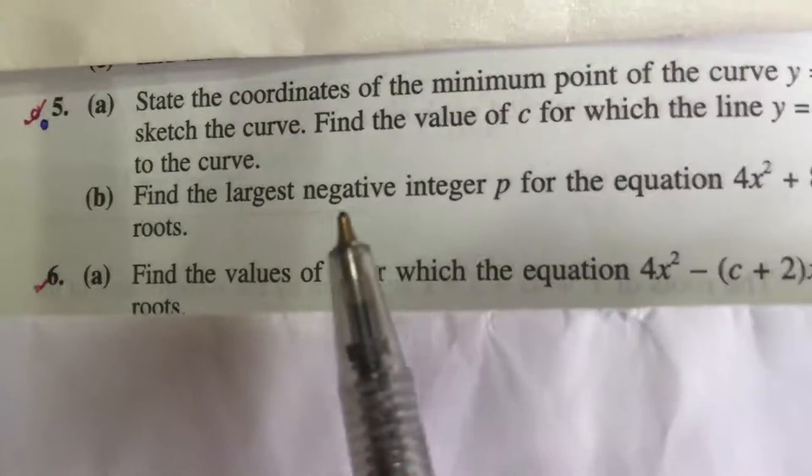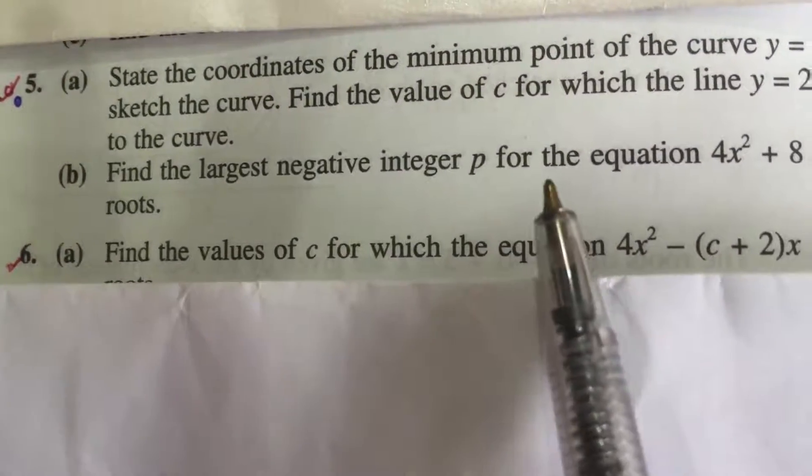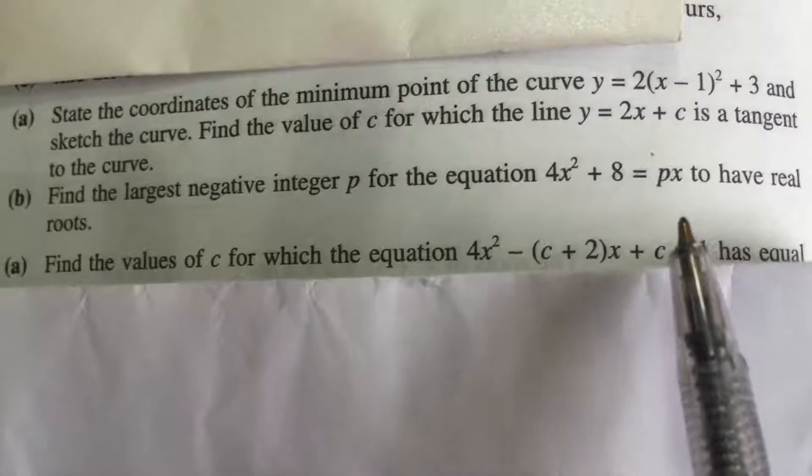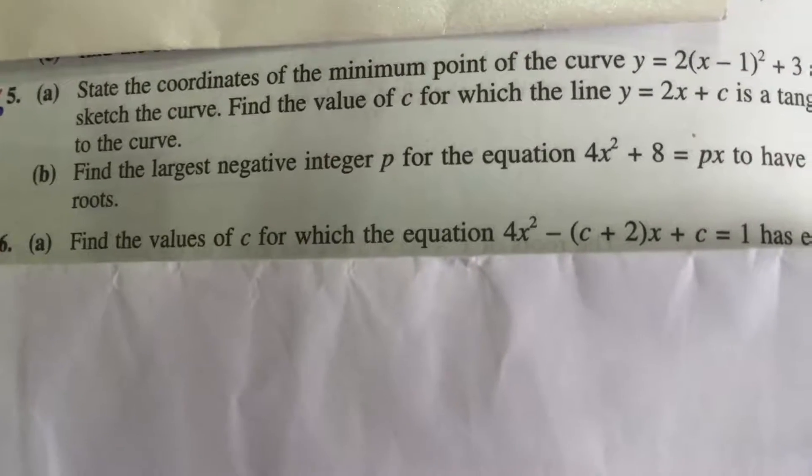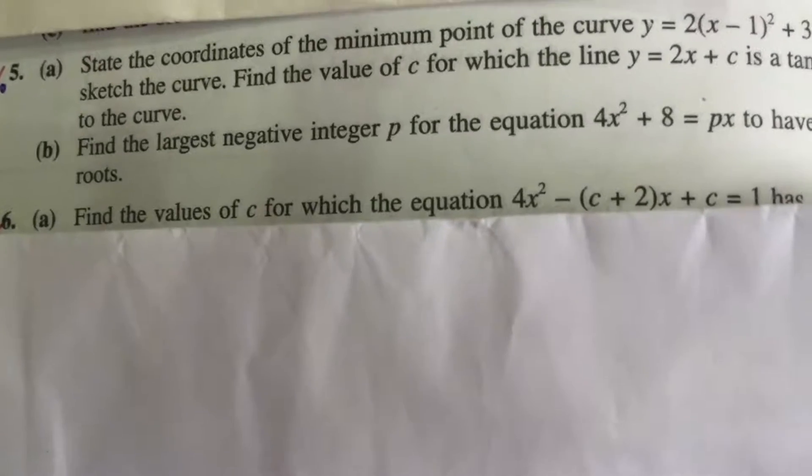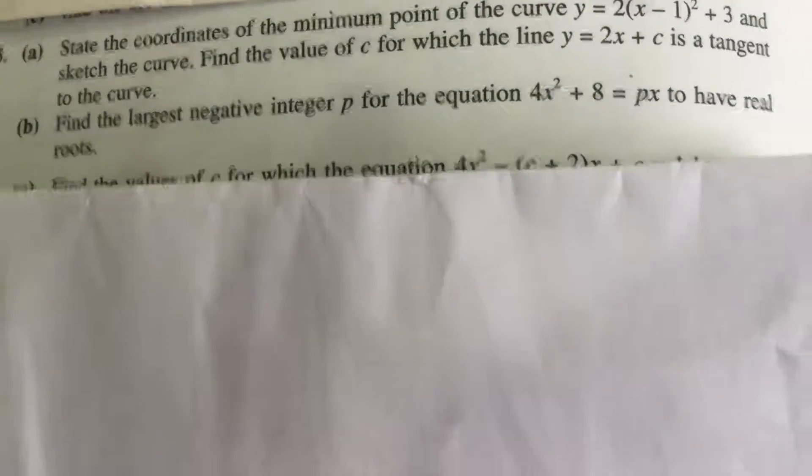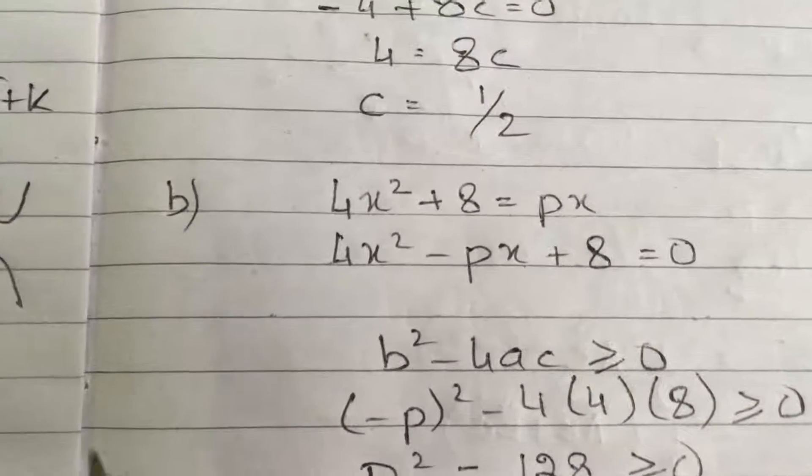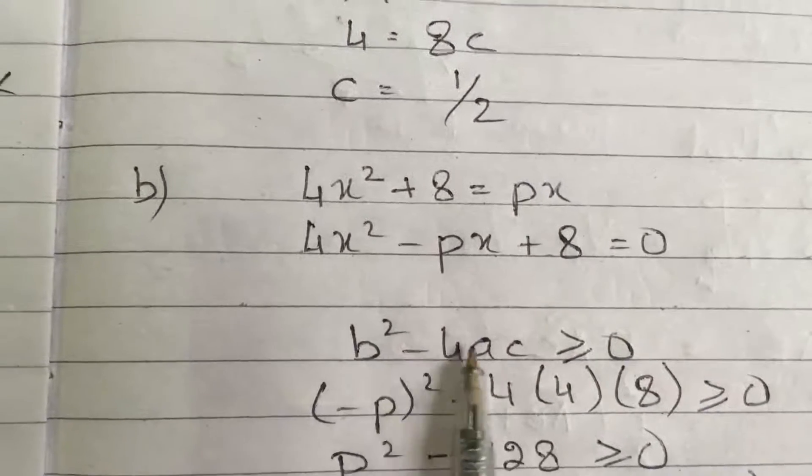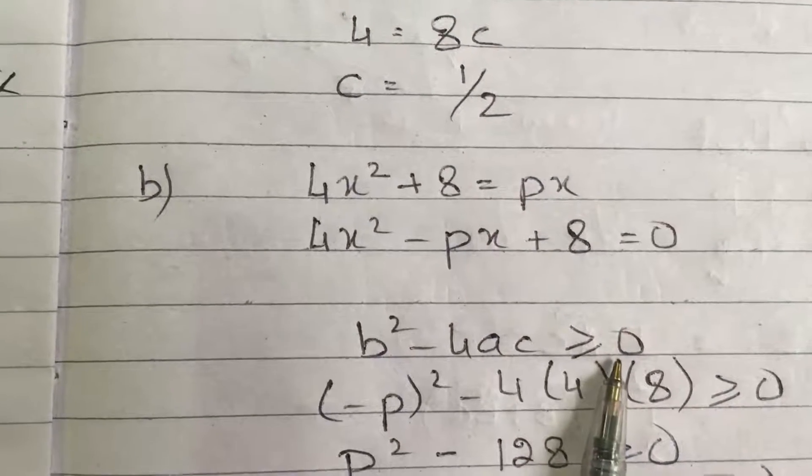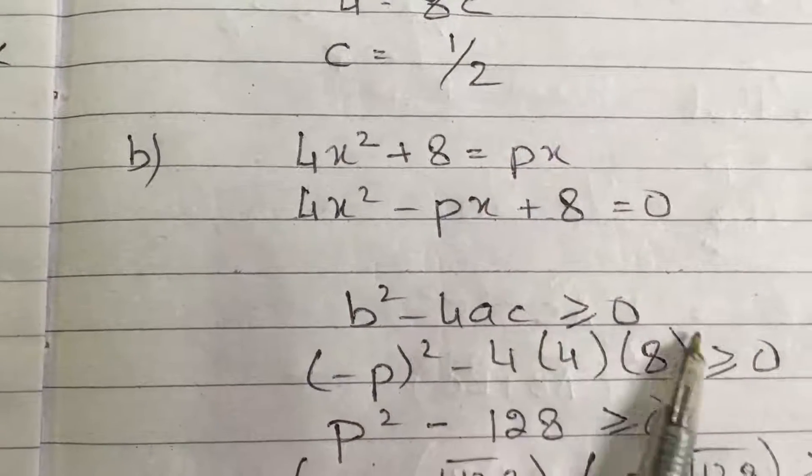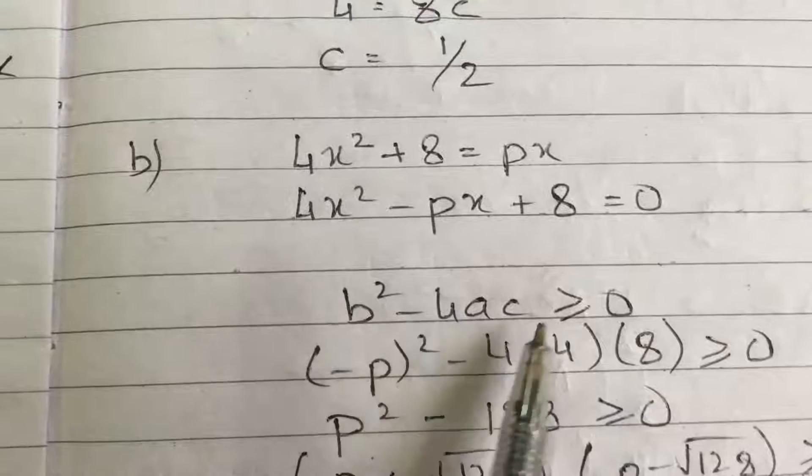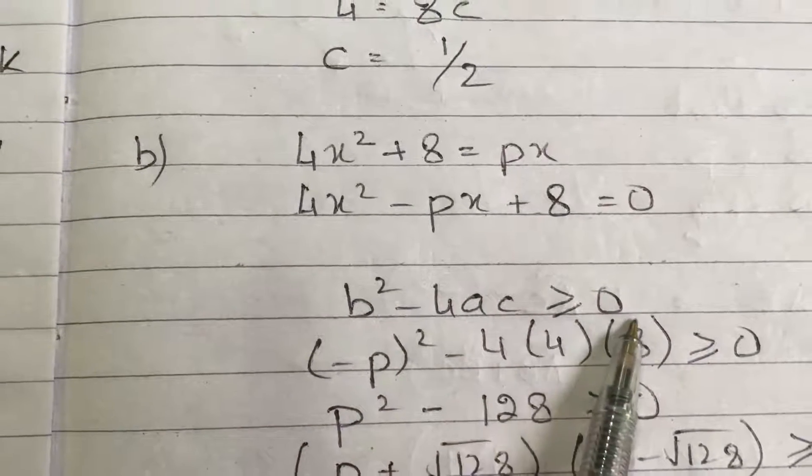Now the second part of the question says, find the largest negative integer p for this equation to have real roots. Now what is the largest integer value which can give you real root for this equation? So for that we know that the discriminant should be greater than or equal to 0, because the question is about real roots. Now real equal or real distinct, we don't know. So that's why we will use discriminant is greater than or equal to 0.